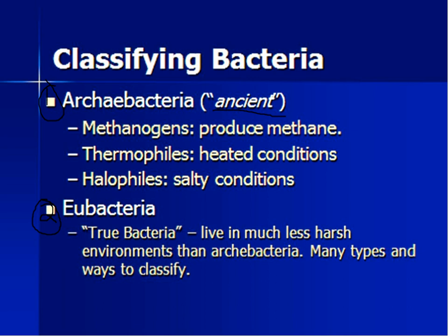Archaeobacteria, on the other hand, is ancient bacteria. This was believed to be the first living thing on Earth ever, like over a couple billion years ago. There are three types of archaeobacteria, and they live in crazy environments. You won't see archaeobacteria around us — they are located at the bottoms of ocean trenches, sometimes in volcanoes. There are methanogens, the ones that produce methane, usually around volcanoes. Thermophiles are found in heated conditions — around volcanoes or heated vents underneath the ocean. And halophiles live in very salty conditions, maybe in the Dead Sea or Salt Lake.